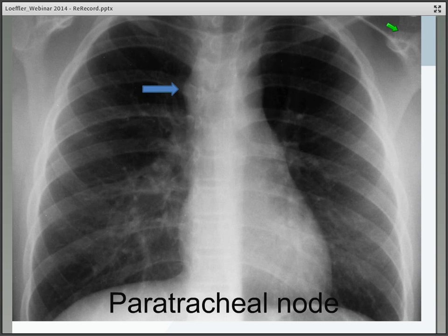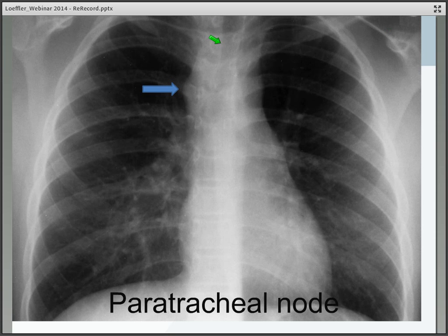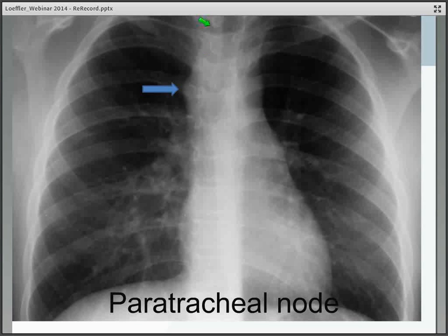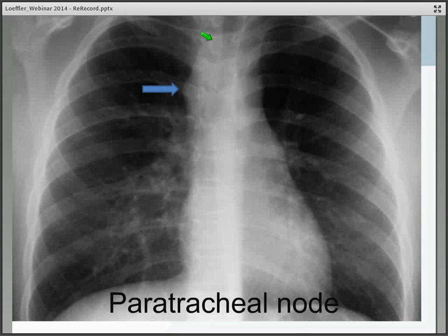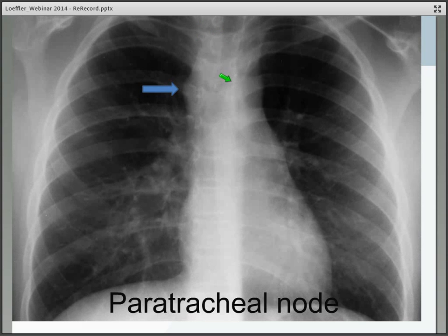This x-ray shows a paratracheal lymph node emphasized by the big blue arrow. Sometimes it's not this obvious and you have to look at the airway. The trachea on a beautifully centered film will actually be a little to the right of the midline because the aorta pushes it over slightly. In this case, the airway is just a little bit to the left of the midline, indicating that this paratracheal node is putting a little pressure on the airway and deviating it ever so slightly. This is a good way to look for a paratracheal lymph node.